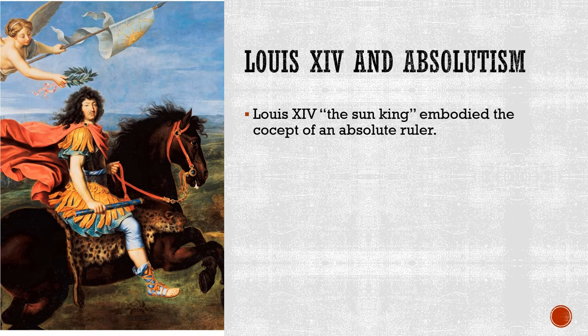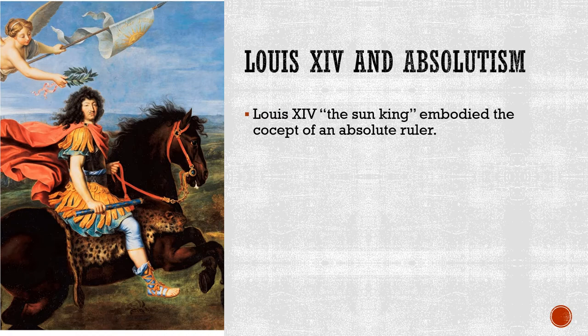No king epitomizes absolutism more than Louis XIV of France, known as the Sun King, because all power emanates from the sun. Coming into his reign as a child, he consolidated all power through two able ministers — Cardinal Richelieu and Cardinal Mazarin. He bypassed the old noble families by converting feudal relationships based on service into monetary payments. With that money, kings were able to create their own bureaucracies loyal to them.